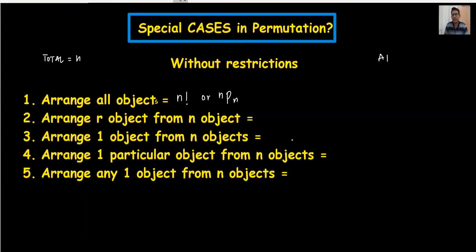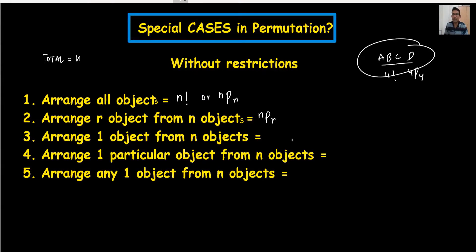For example, we have a, b, c, and d, so we write 4 factorial or 4 P 4. Second case: arrange r objects from n objects. For example, if n is 4 and I want the arrangement of two objects only, then r will be 2, and I write 4 P 2 and use the calculator to get the answer.